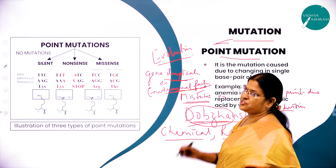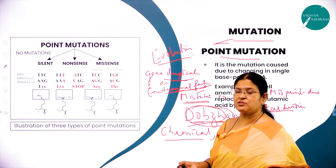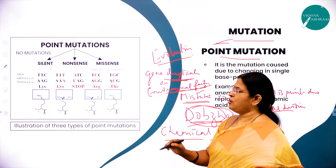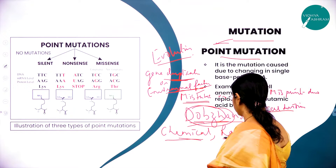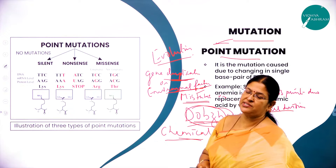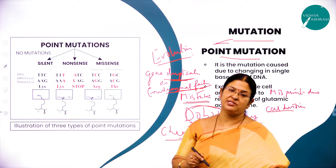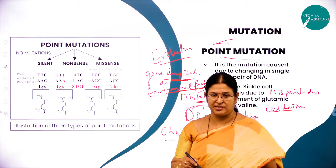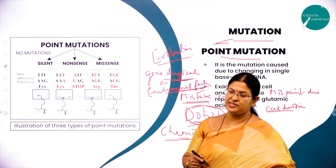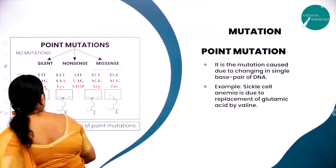Hence we say mutations are the raw materials for evolution. The causes for mutation include errors in gene duplication and environmental factors like chemicals and radiations. Mutant genes in germ cells are passed from generation to generation and are of evolutionary significance.